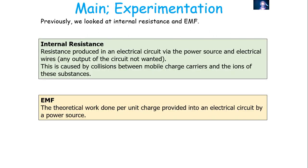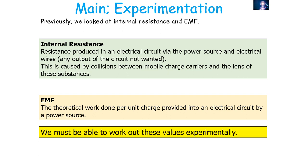Previously, we looked at the terms internal resistance and EMF. Internal resistance is the resistance produced in an electrical circuit via the power source and the electrical wires — basically any output of the circuit not wanted. That is caused by the collisions between the mobile charge carriers and the ions of these substances. The EMF is the theoretical work done per unit charge provided into an electrical circuit by a power source.